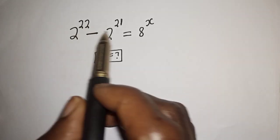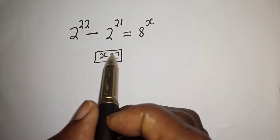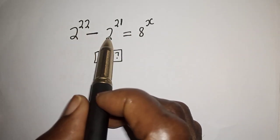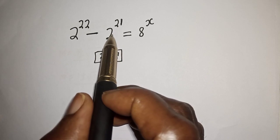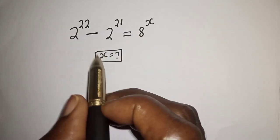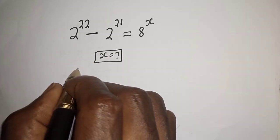Hello. How to solve for x from this equation: 2 raised to power 22 minus 2 raised to power 21 is equal to 8 raised to power x. Solution.